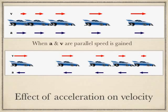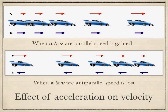In the next motion diagram, the race car is slowing down — the velocity vectors are getting smaller and speed is being lost. The acceleration is pointing in the opposite direction, or negative acceleration with positive velocity. The acceleration is taking away from the velocity, so speed is being lost. When acceleration and velocity point in opposite directions, or anti-parallel, this indicates that speed is being lost.